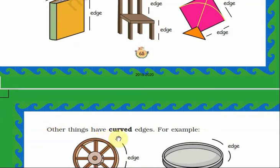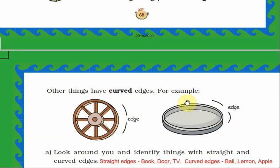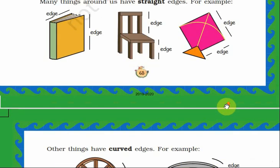Other things have curved edges. A wheel, for example, has a curved edge — this is not straight, it is curved. A round shape has a curved edge.